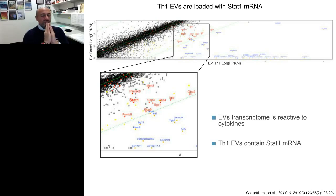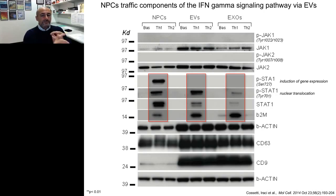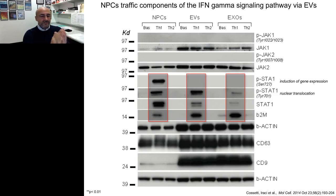The question was whether what we were observing was going to be functional, and whether loading of long RNAs might be associated to loading of proteins as well. Combining long RNA-seq with biochemistry, we found that NPCs under TH1 conditions, and similarly extracellular vesicles TH1 and exosomes TH1, showed a significant and very specific upregulation of total and phosphorylated STAT1, not observed at any level in basal or TH2-treated cells, vesicles, and exosomes. A preliminary conclusion was that NPCs traffic components of the interferon-gamma signaling pathway via extracellular vesicles.